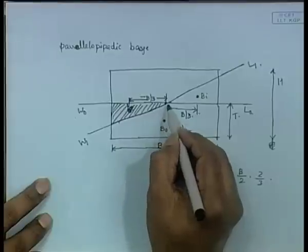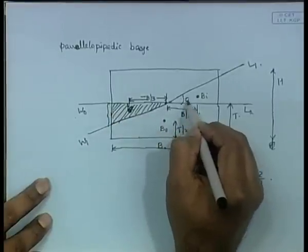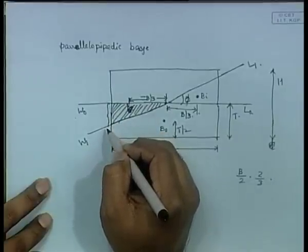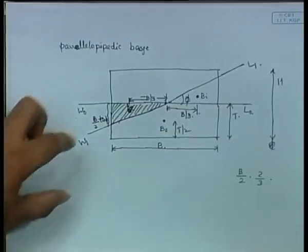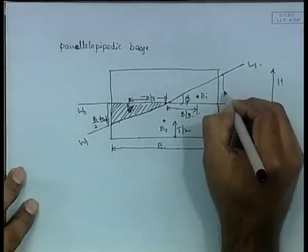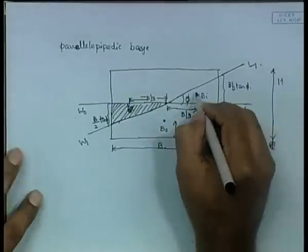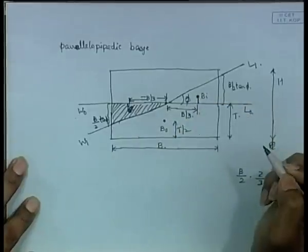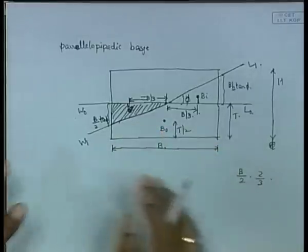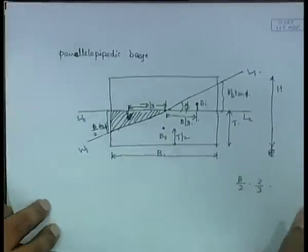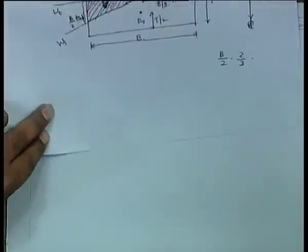Let us say the body heels through angle phi. The height of the wedge is B/2 tan phi. To find the transverse center of buoyancy (TCB) and vertical center of buoyancy (VCB), we follow a table method which is less prone to mistakes. We make a table with columns for volume, TCB, and moment.